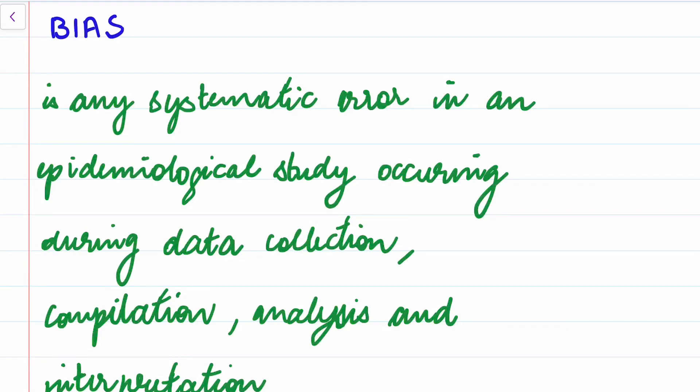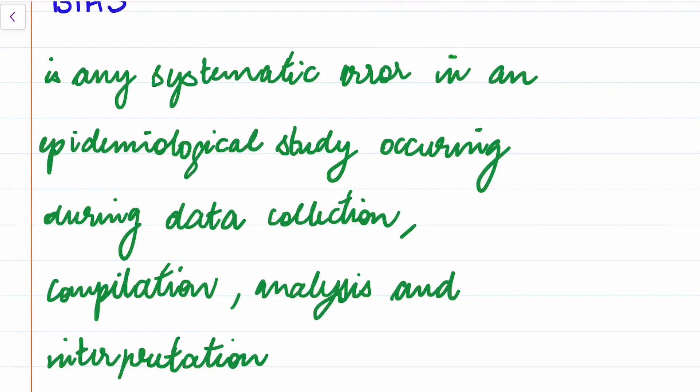I will repeat the definition: bias is any systematic error in epidemiological study which produces results that are consistently distorted because of non-random factors.